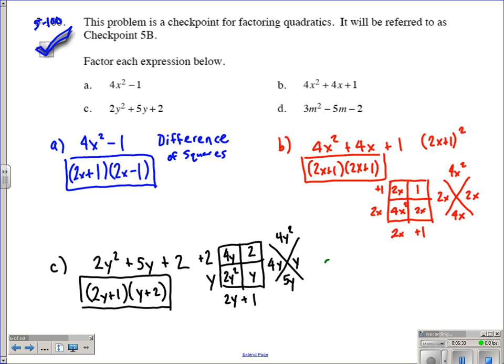Last one here, letter d. We have 3m squared minus 5m minus 2. So is there a greatest common factor besides 1? No, there's not. We have a trinomial here, so we could go ahead and set up our generic rectangle, or if you're one of the people who doesn't use a generic rectangle, you would think about setting up 2 binomials here.